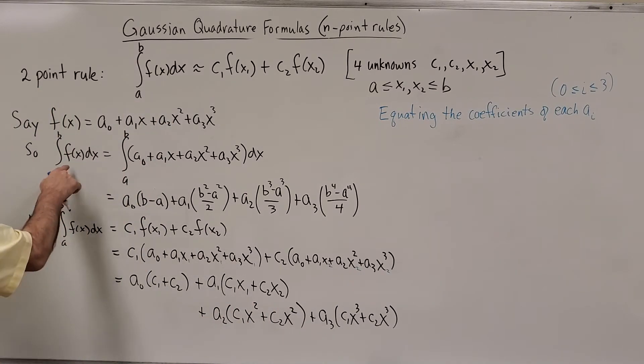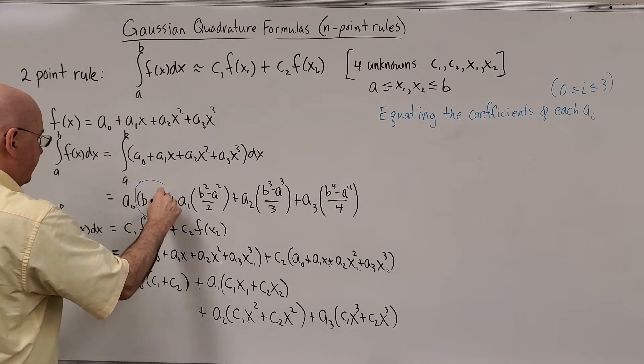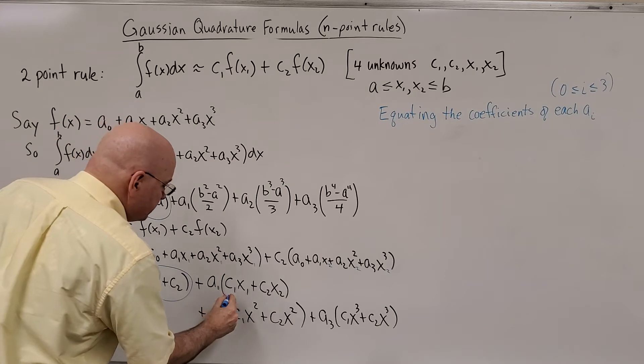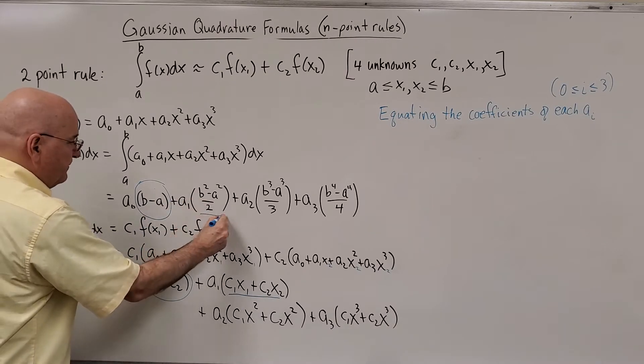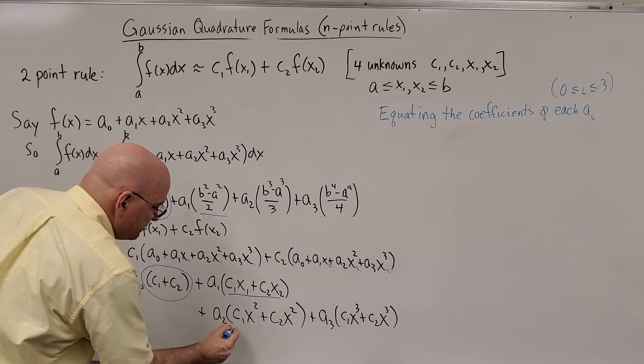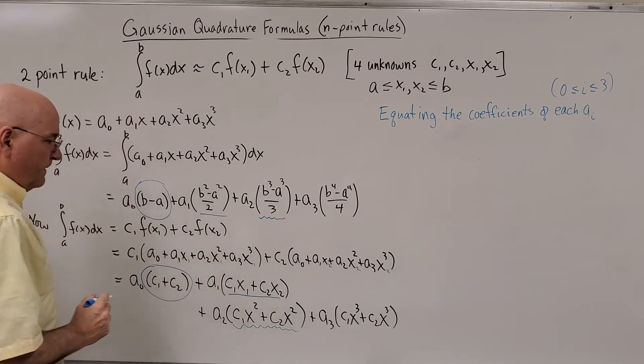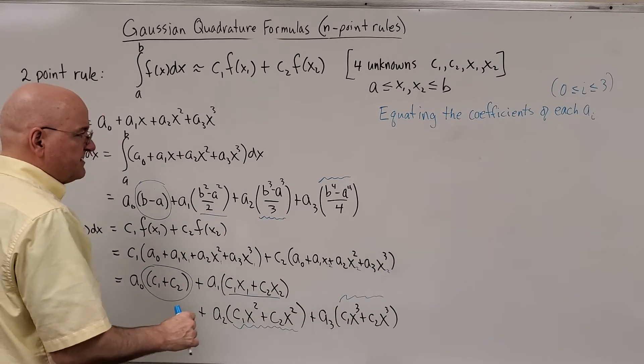So now we have two representations of the integral. And all we're going to do to figure out what C1, X1, C2, and X2 are, like I said over here, equate the coefficients of A0, for example. So set C1 plus C2 to B minus A. Set C1 X1 plus C2 X2 equal to B squared minus A squared over two. Under the squiggle is the coefficient of A2. And then the coefficient of A3.